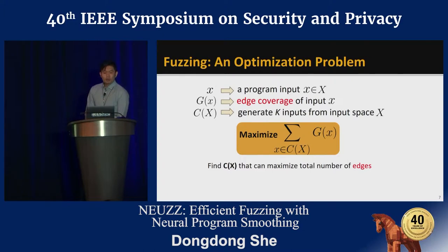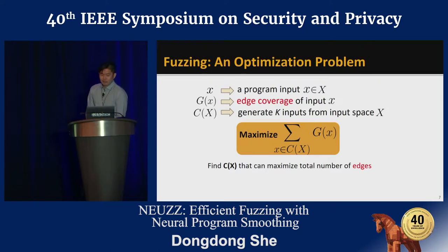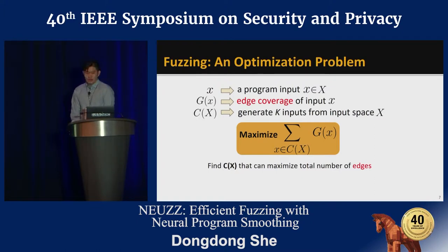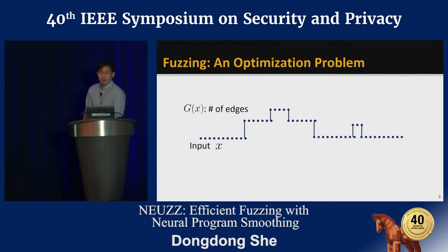To solve this problem, modern fuzzers turn to an easier target: edge coverage, rather than number of bugs, simply because in practice the more edges a fuzzer can explore, the more likely it can uncover a bug. We define g(x) as the number of edges taken during execution of an input on the target program. Now we have g(x), a step function representing edge coverage. Compared with f(x), g(x) is easier to optimize since it contains more states and more transitions between them.